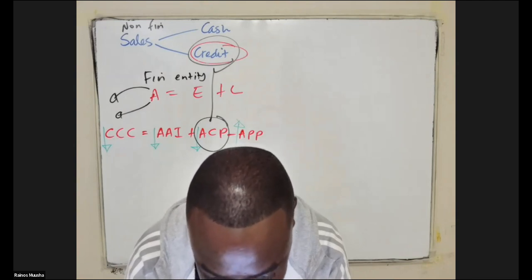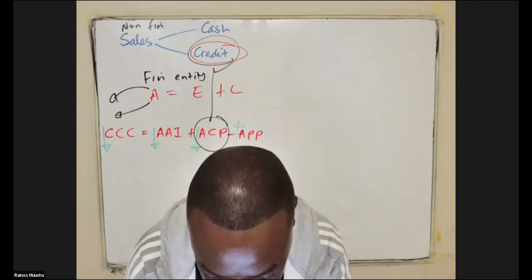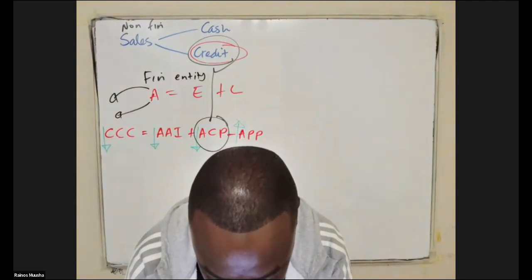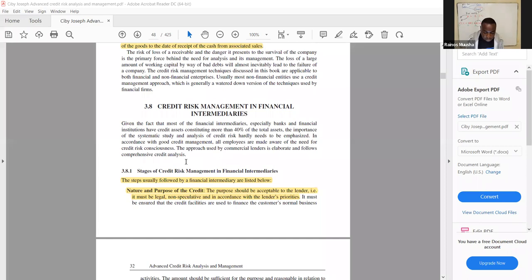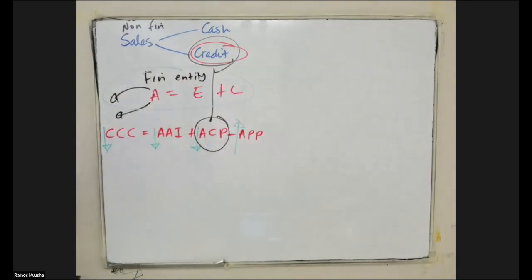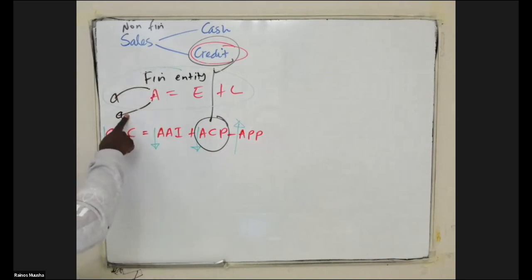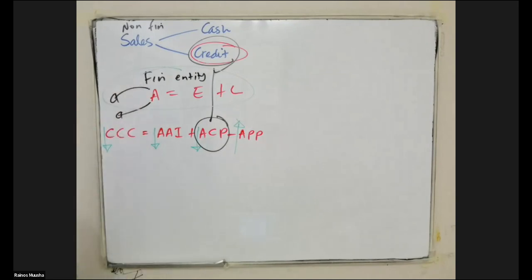Moving on to section 3.8 — credit risk management in financial intermediaries. Here we look at financial assets as the income-generating element for financial intermediaries. The question is how do we manage the credit risk emanating from these financial or credit assets. Based on that, they look at the stages of credit risk management in financial intermediaries.